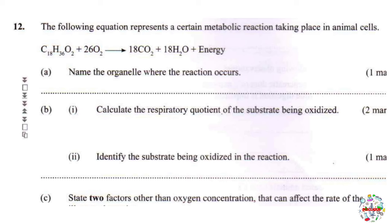Moving on to question 12: the following equation represents a certain metabolic reaction taking place in animal cells. We can see a food substance reacting with oxygen, producing carbon dioxide, water, and energy. The presence of energy and oxygen tells us this is respiration — specifically aerobic respiration. Part A: name the organelle where the reaction occurs. This is the mitochondrion.